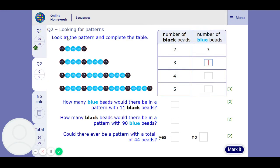Looking for patterns. Look at the pattern and complete the table. So black beads 2, blue beads 3. Black beads 3, we've just got to count the blue beads. Well there's 6 of them. This one, count the black beads as 4. Count the blue beads, it's going to be 9 of them.